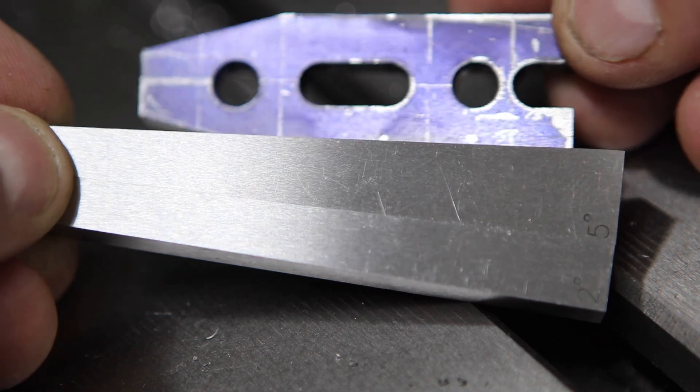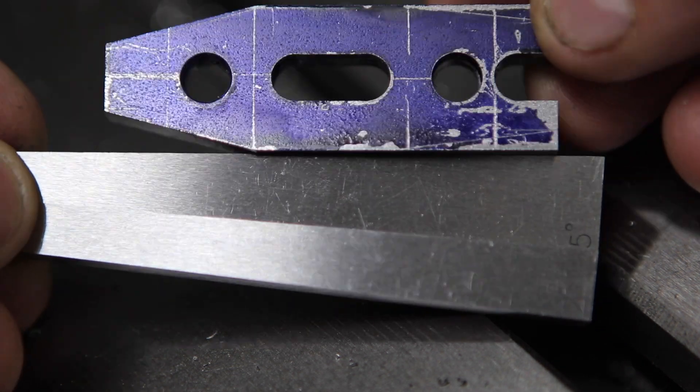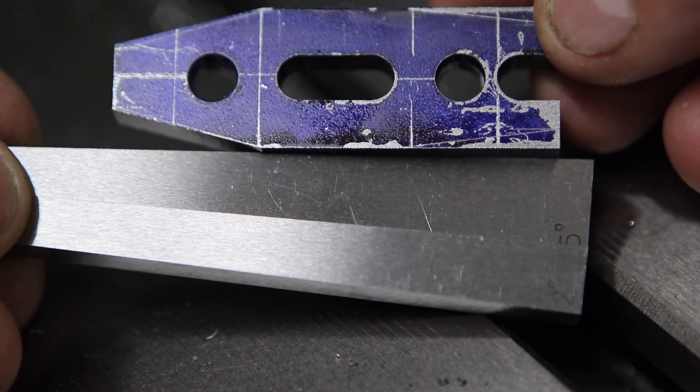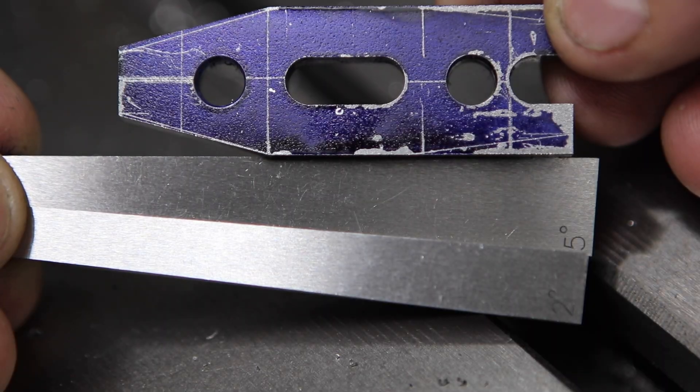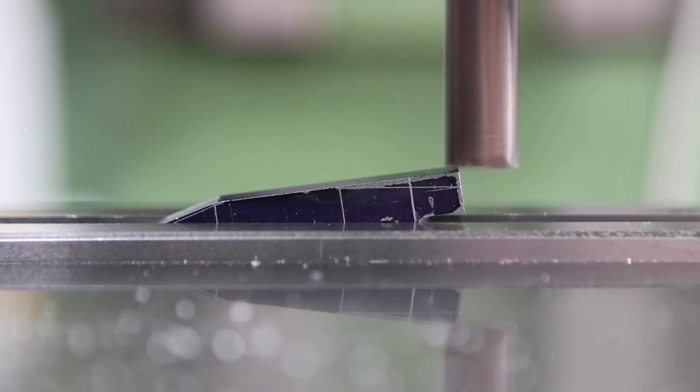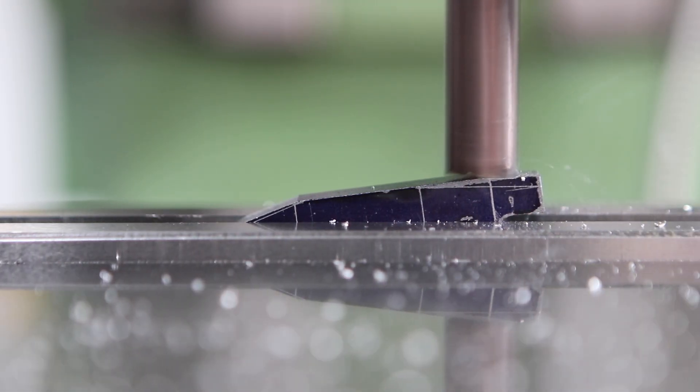So now on to the other angle, seven degrees. As I said you can add these angle blocks together so I'm using the two and the five degrees here to get seven degrees. And I go on to cut the other side in exactly the same way as the first side.